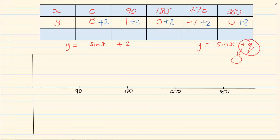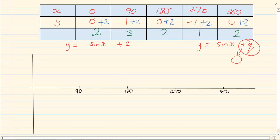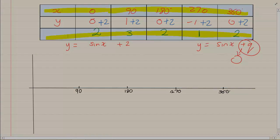My new coordinates are: 0 plus 2 is 2, 1 plus 2 is 3, 0 plus 2 is 2, minus 1 plus 2 is 1, and 0 plus 2 is 2. So our new coordinates keep the standard x values but our y has changed.